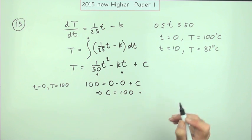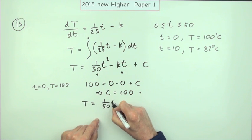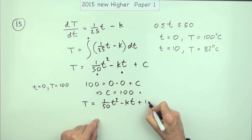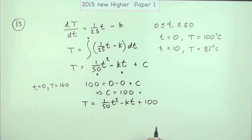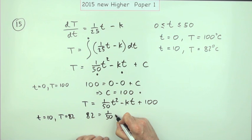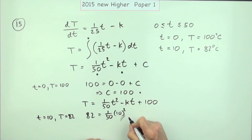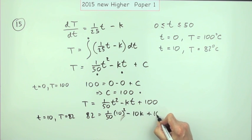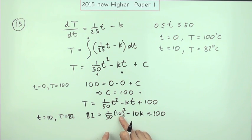That's worth a mark. That means I can now write this as one-fiftieth of t squared minus kt plus 100. I'm getting closer. I've only got one thing to find. I need some more information, and that was the second piece. If t is 10, that time 10 minutes, the temperature was 82. Feeding that in: 82 is one-fiftieth of 10 squared minus 10 times k plus 100. This is all just arithmetic. 100 divided by 50 is 2, so you've got 102. Take away the 82 is 20, bringing that over as 10k, so k equals 2.